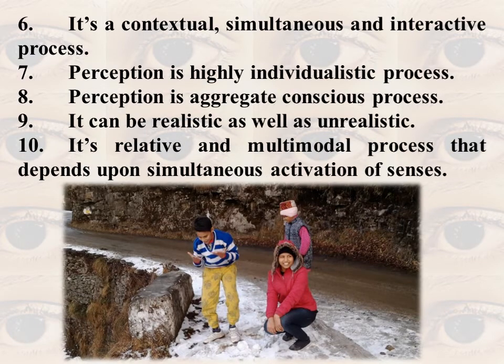The last characteristic of perception is that it is relative — that is, a contextual and multimodal process that depends upon the simultaneous activation of senses. Multimodal process means the perceptual process cannot occur in a single mode; your various sense organs have to be activated, and they have to be activated simultaneously. Your brain has to activate, your neurons have to activate. All this process involved in perception is known as multimodal. It is also relative — not pure. So these are the 10 important characteristics of perception.